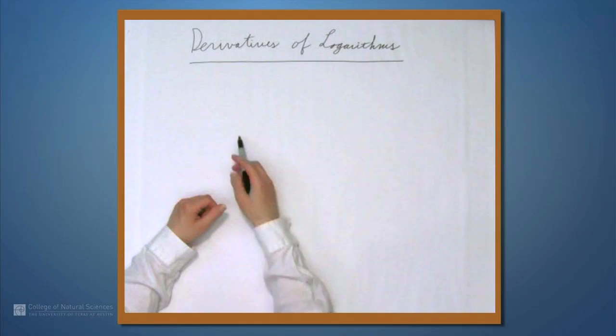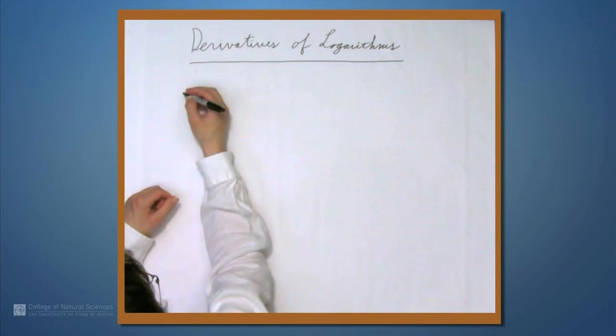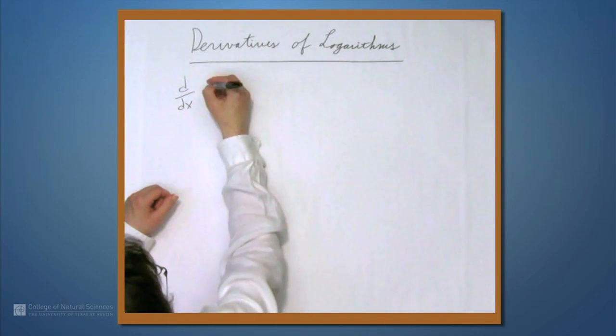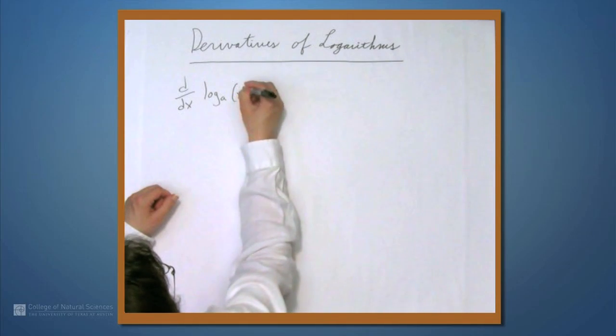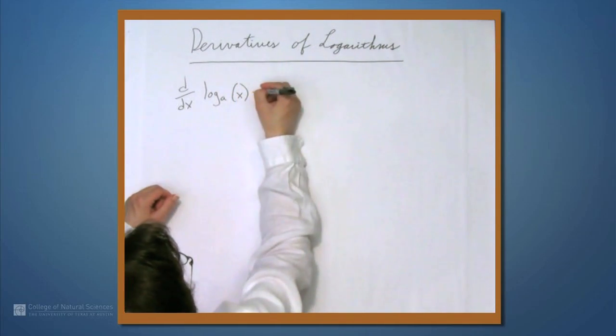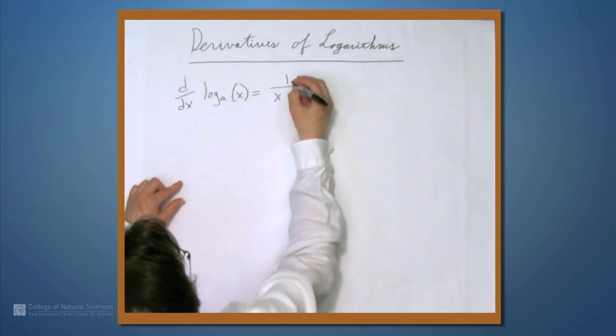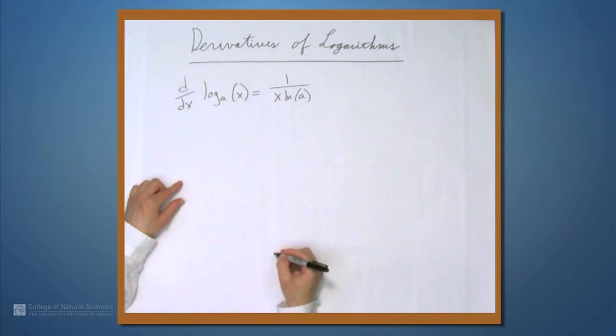We're here at the example table, and in this video we're going to look at the derivatives of logarithms. The general formula for the derivative of a logarithmic function, say log base a of x, is 1 over the quantity x times the natural log of a.